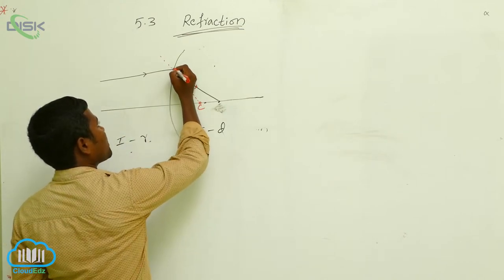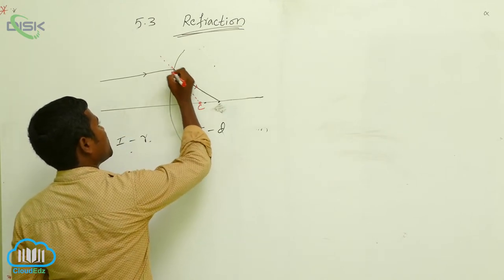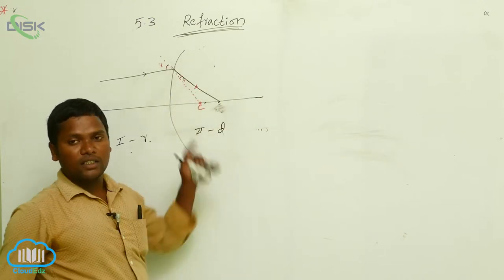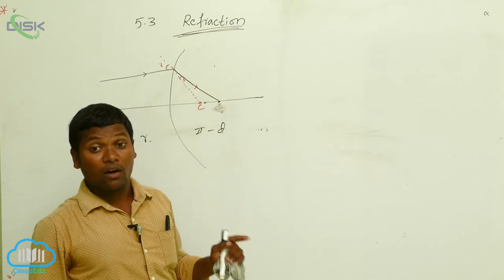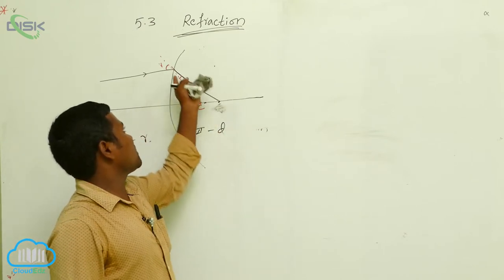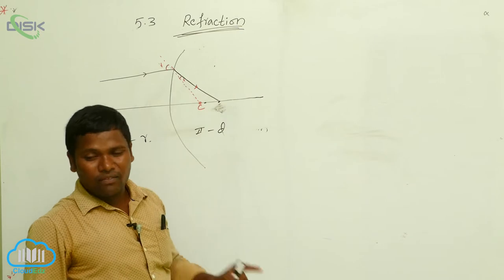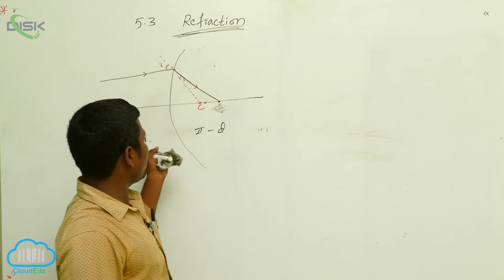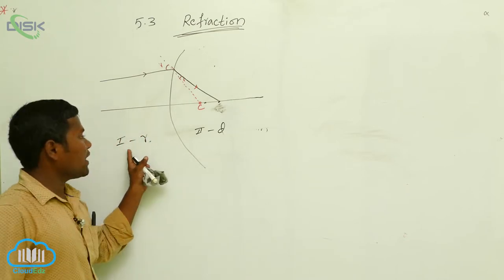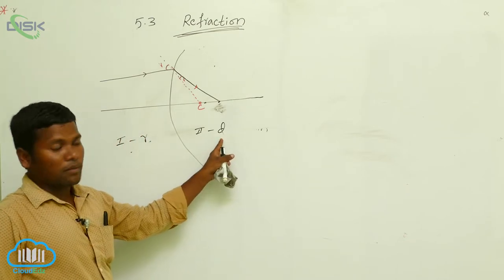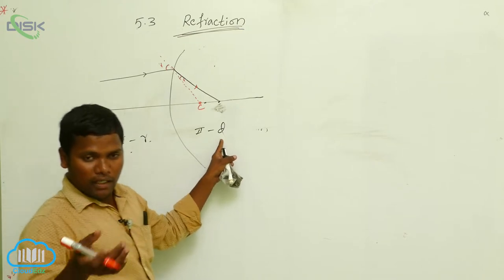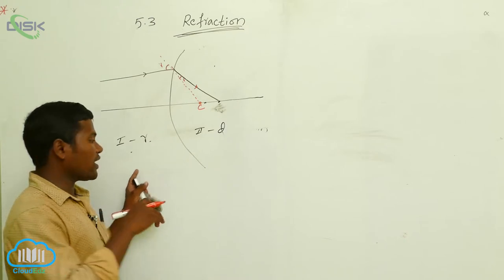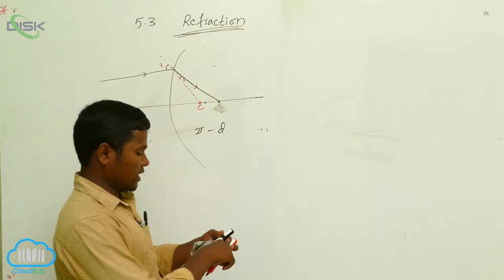So here an angle is there. This is I — the incident angle. This is R — the refraction angle. Not reflection — refraction. This is the incident angle and this is the refraction angle. So the light ray started from the rarer medium to the denser medium in this first case. Sometimes my light rays are coming from the denser medium to the rarer medium. In that case, how will the diagram be? Let us see.